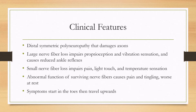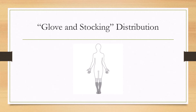What causes the pain? It's caused by abnormal function of the surviving nerve fibers, and this pain is characteristically worse at rest. The symptoms start in the toes and then travel upwards in a glove and stocking distribution. Characteristically, once it reaches about mid-calf, the fingers become affected as well.